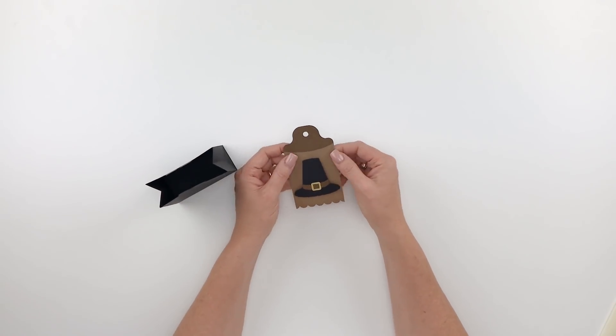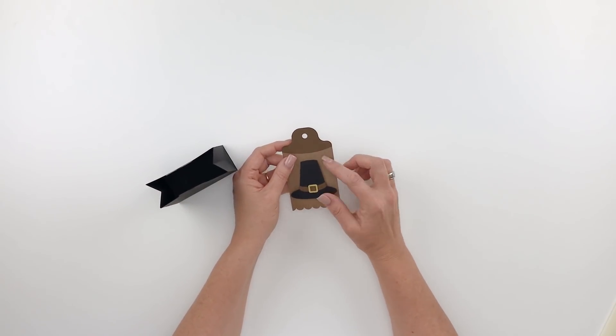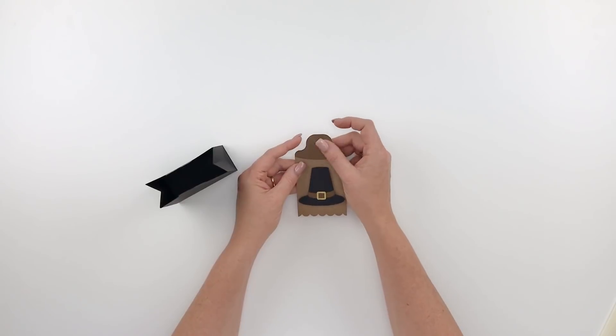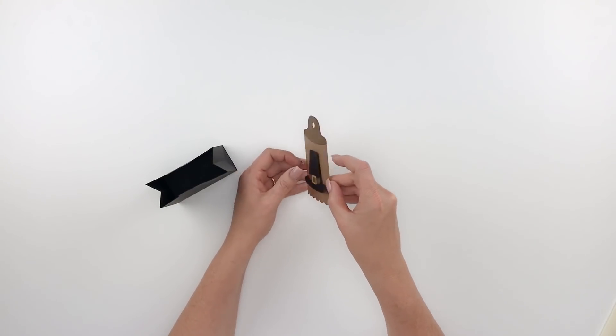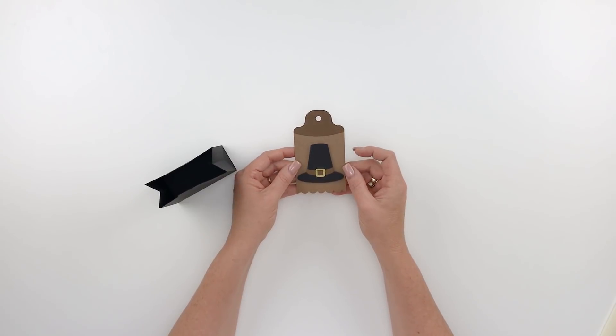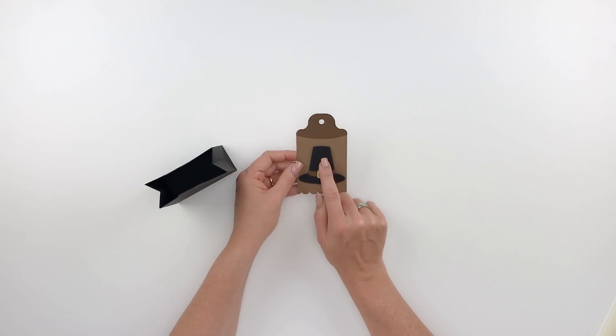Then you have your cute little tag and just go ahead and maybe ink around the edges and layer the cute little top piece on. Then we've used a little pop dot here for some dimension on the cute little icon. This pilgrim hat's particularly easy, it's just three pieces. Some of the other tags are a little more intricate and detailed.